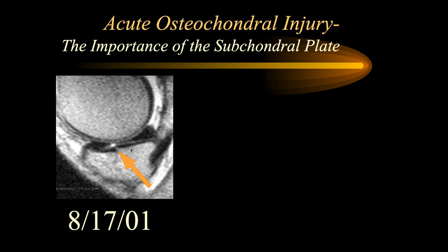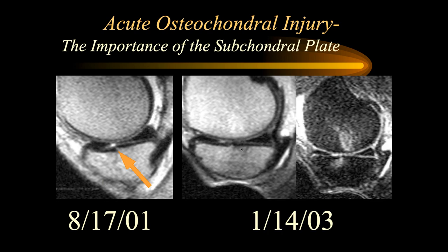A low-field scan shows an impacted fracture of the tibial plateau with fairly normal-looking cartilage. Over time, we see a little irregularity of the subchondral bone. On the STIR image, granulation tissue and edema appear in the subchondral bone on both sides — meaning degenerative changes have developed. We don't see direct cartilage loss because of image quality, but bony reactive changes show this patient developing secondary degenerative disease at the area of the fracture.